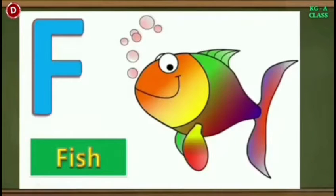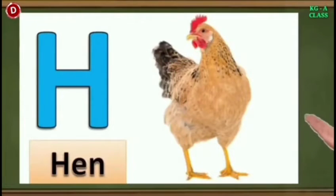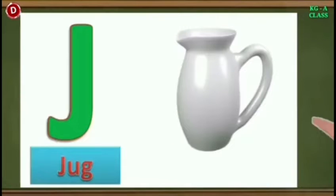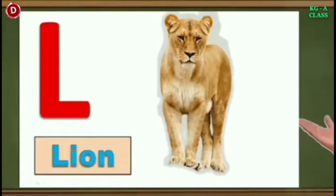The next letter is capital F. F for fish. Then this is G. G for goat. Now comes H. H for hen. Then the next letter is I. I for ice cream. We all love to eat ice cream in summers. Now comes J. J for jug. Children, after J, this is K. K for kite. Next letter is L. L for lion.